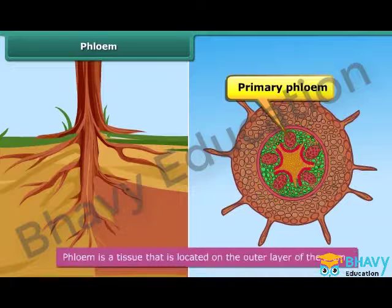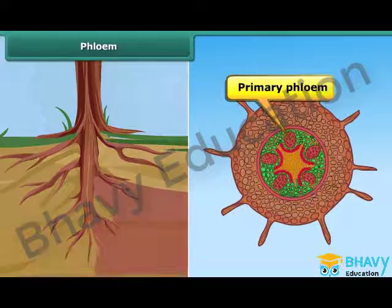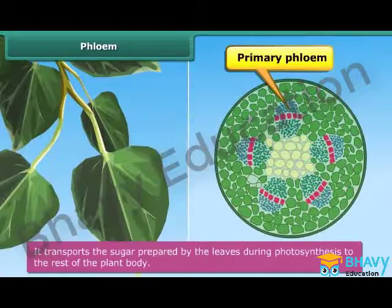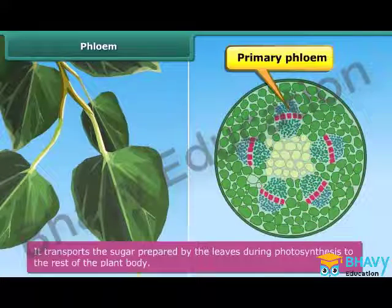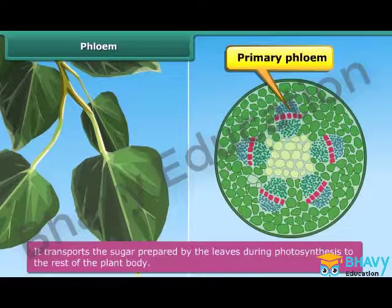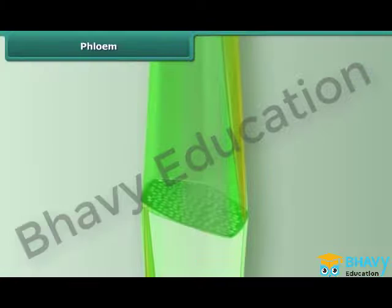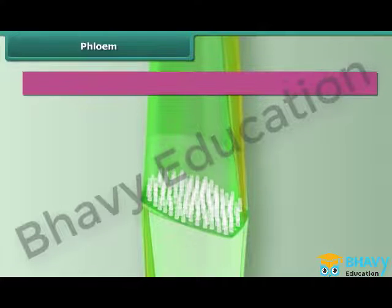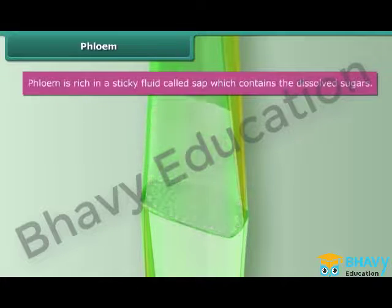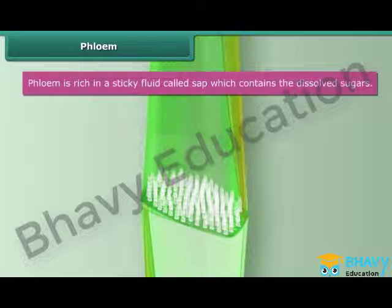Phloem is a tissue located on the outer layer of the stem. It transports the sugar prepared by the leaves during photosynthesis to the rest of the plant body. Since it transports sugar, phloem is rich in a sticky fluid called sap, which contains the dissolved sugars.